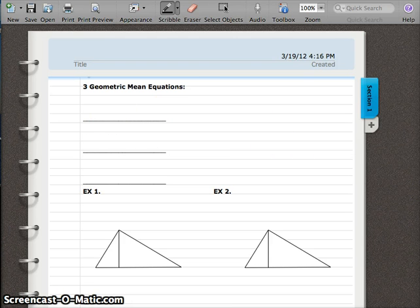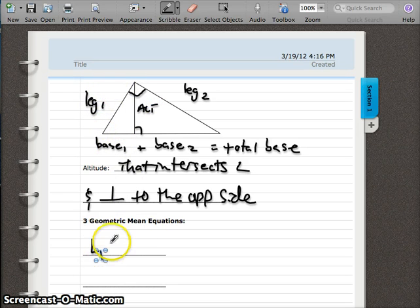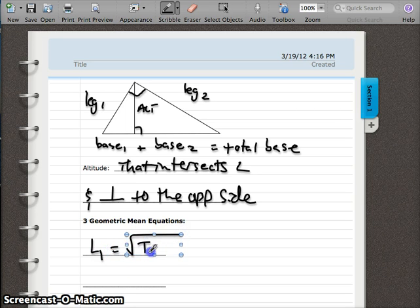So to find leg 1, let's look at leg 1 real quick. I can find the length of that segment by putting in the following formula. Leg 1 equals the geometric mean of the total base, I'm going to say TB for total base, times the base that corresponds with the leg. So base 1 corresponds with leg 1. So I'm going to use base 1 in my formula.